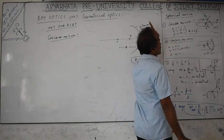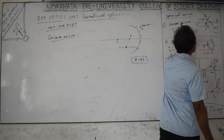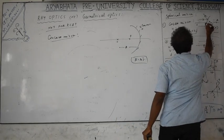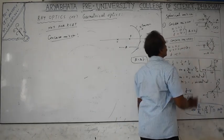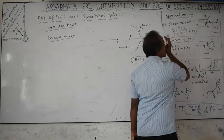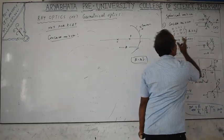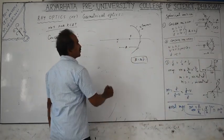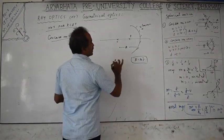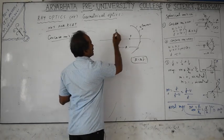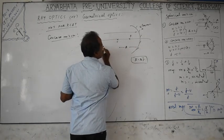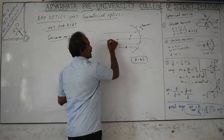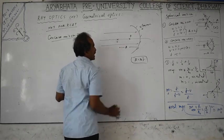In the sign convention, distances in the direction of light rays are positive; against the direction are negative. We compulsorily take light rays traveling from left to right. For the concave mirror, light rays coming parallel to the principal axis — paraxial rays close to the principal axis, not marginal rays — are used to find the focus.